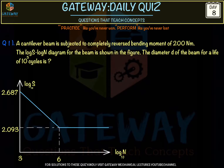The log S - log N diagram (S-N curve) is given for the beam, and we need to find the diameter d for a life of 10^5 cycles. This is from a rotating beam test. By observing the curve, it appears to be for ferrous materials — generally, after 10^6 cycles the curve becomes asymptotic, meaning the endurance limit remains the same regardless of the number of cycles.